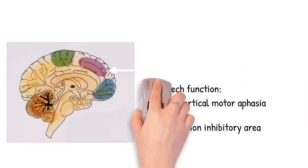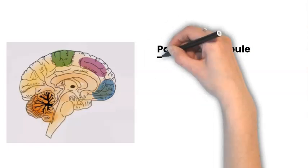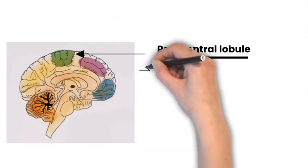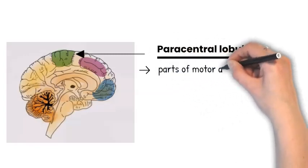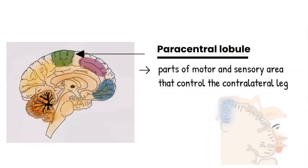The third area is the paracentral lobule. The paracentral lobule contains parts of the motor and sensory areas that control the contralateral leg.